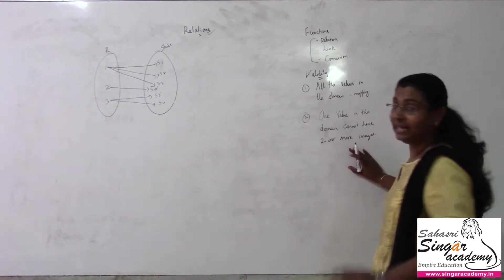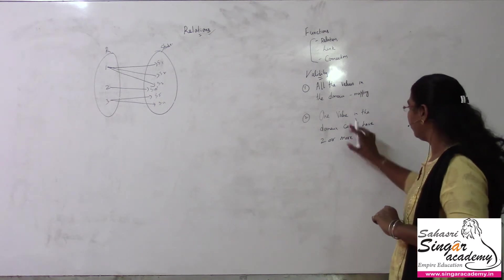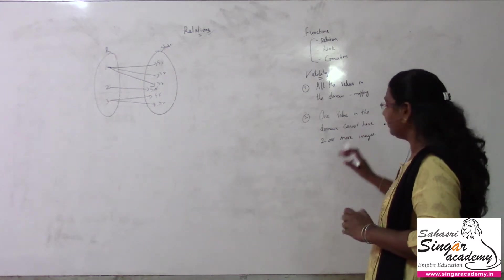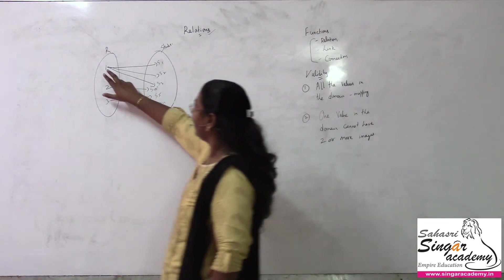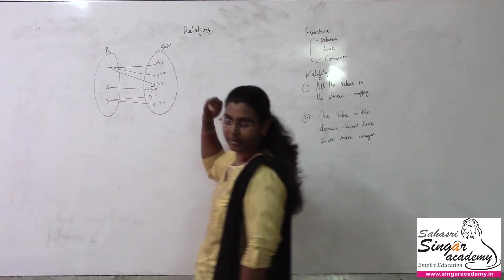In this case, we said there is no function in earlier videos. One value in the domain cannot have two or more images. This is what we said means no function.